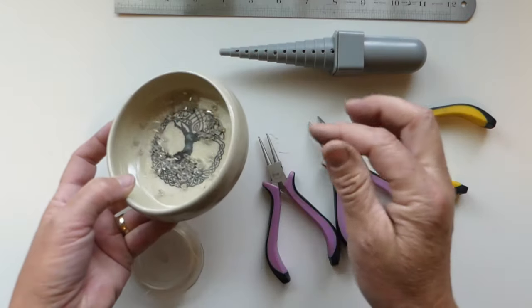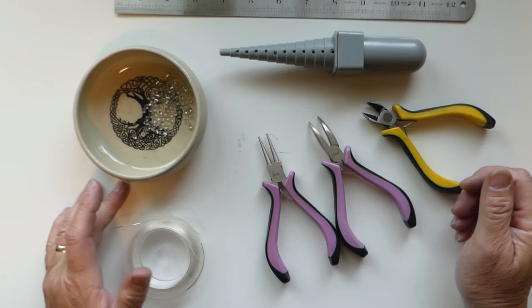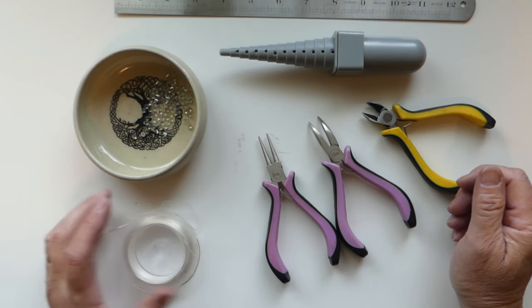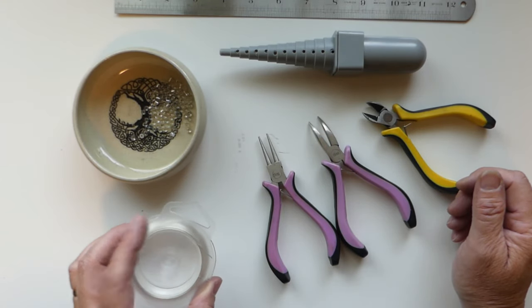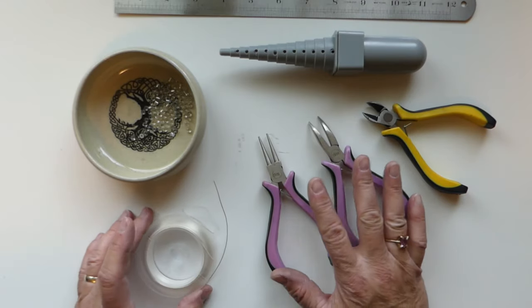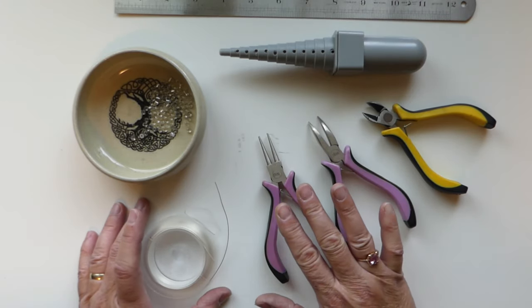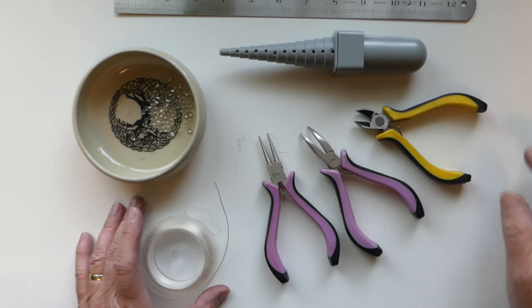And once again you can use any beads that you prefer. I just have the seed beads here, and then we are using 22 gauge silver wire, and then our jewelry pliers - so we've got our round nose, we've got our hooked nose, and then just a pair of snips.